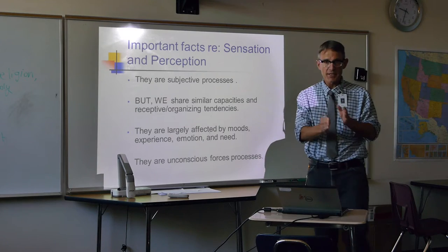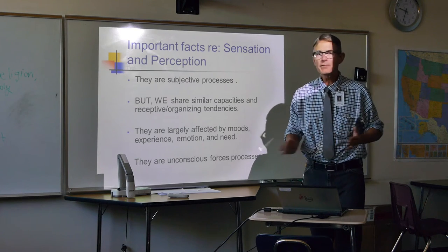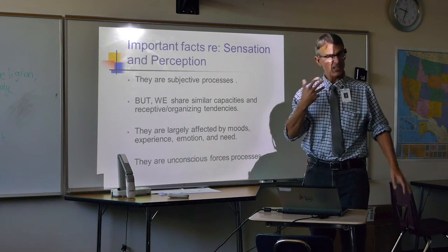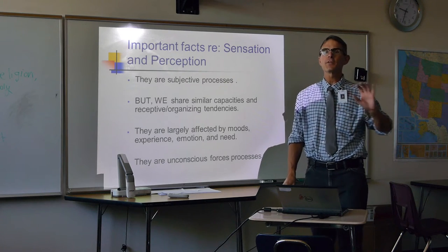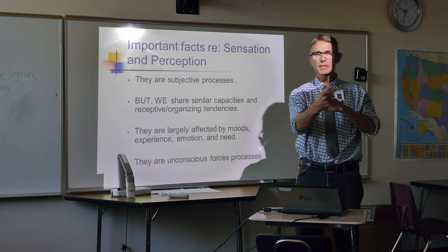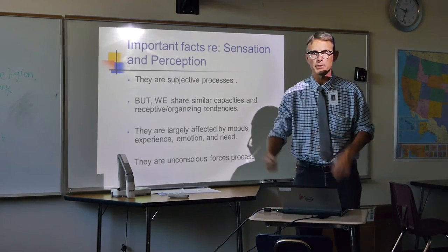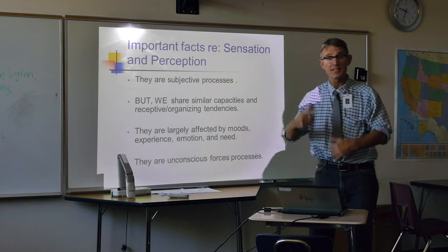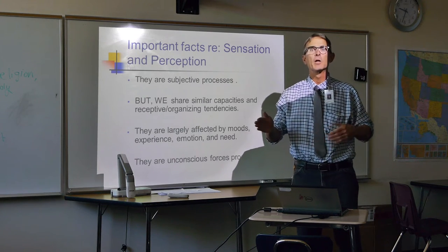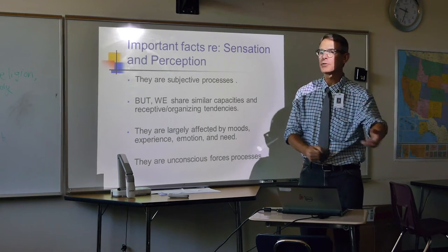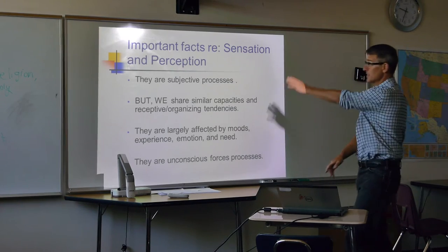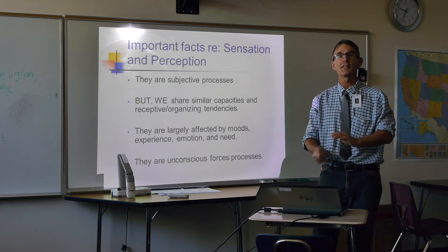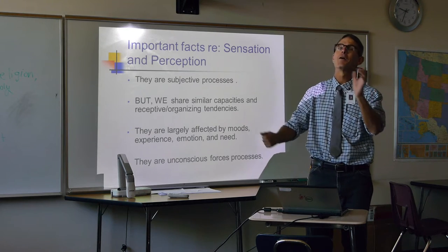There are several important facts about this information processing system. First, the processes of sensing and perceiving are subjective — they're different in each individual. People take in information differently and perceive colors in distinct ways. Because of our vastly different experiences, we interpret things very differently. However, we also have so much in common that we ultimately share understandings: these are mammals, these are reptiles, this is a screen — and those common understandings allow us to function well in society, such as stopping at red lights and going at green.